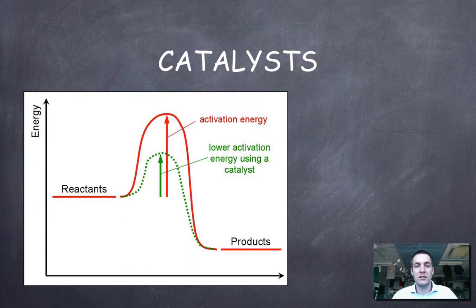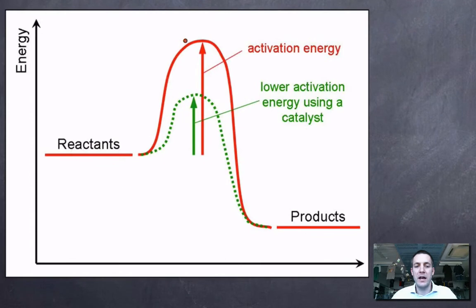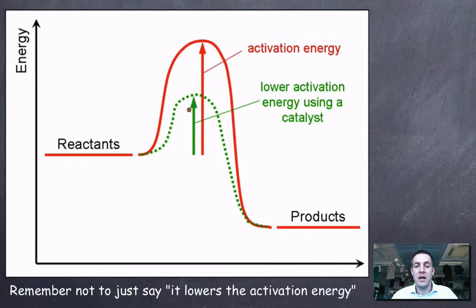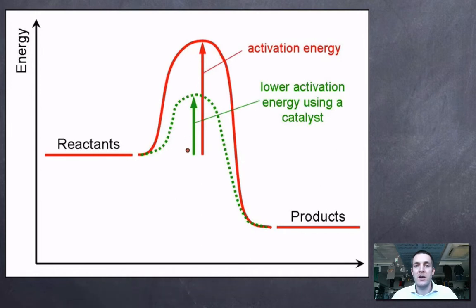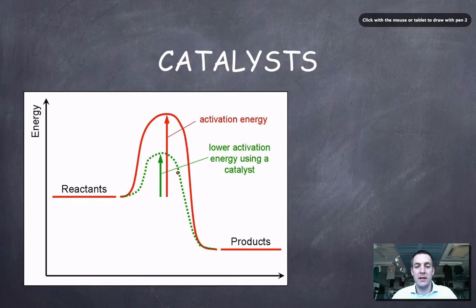Now if we look at what catalysts do, we can take this back to our study of energetics. The activation energy — represented in red — is the size of the hump between reactants and products. If we add a catalyst, remember that a catalyst provides an alternative route for the chemical reaction, and this new route has a lower activation energy than the uncatalysed route, which means particles will require less energy when they collide in order for a reaction to take place.